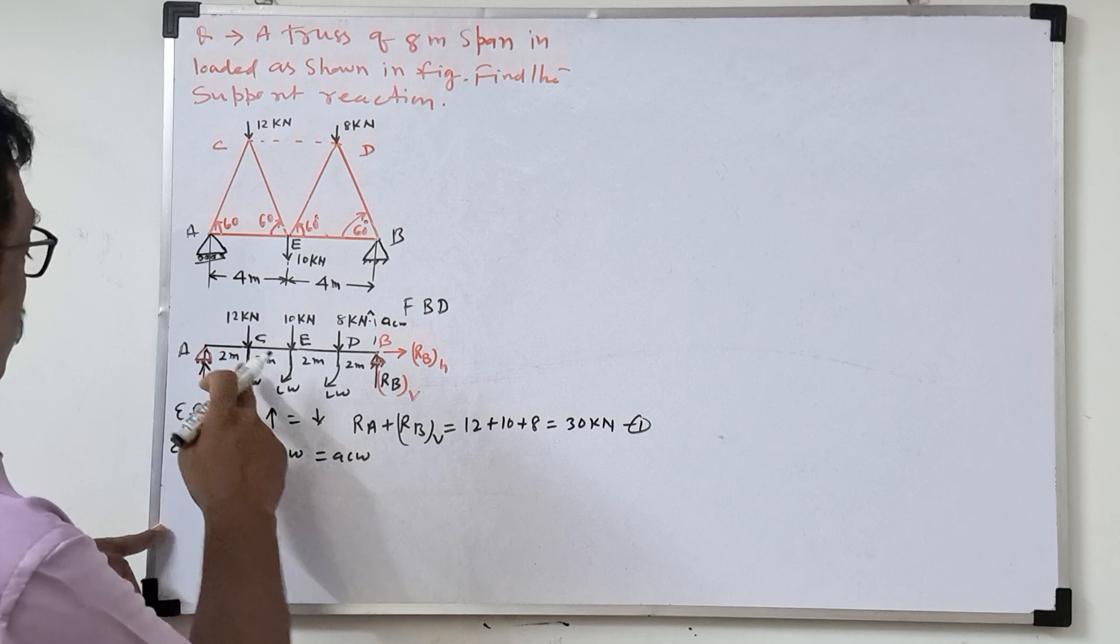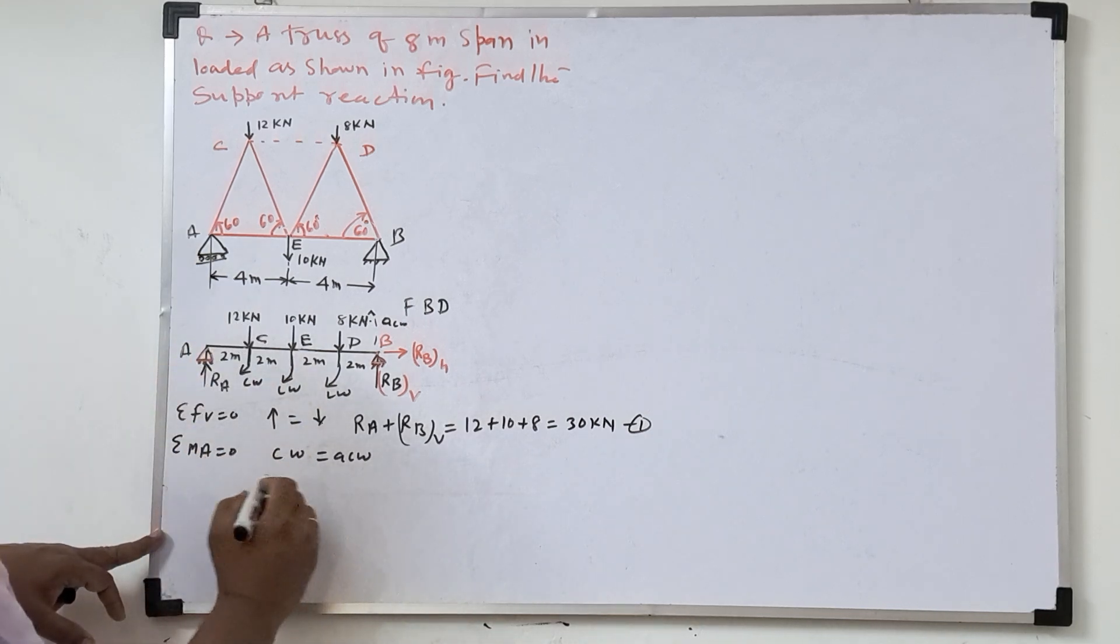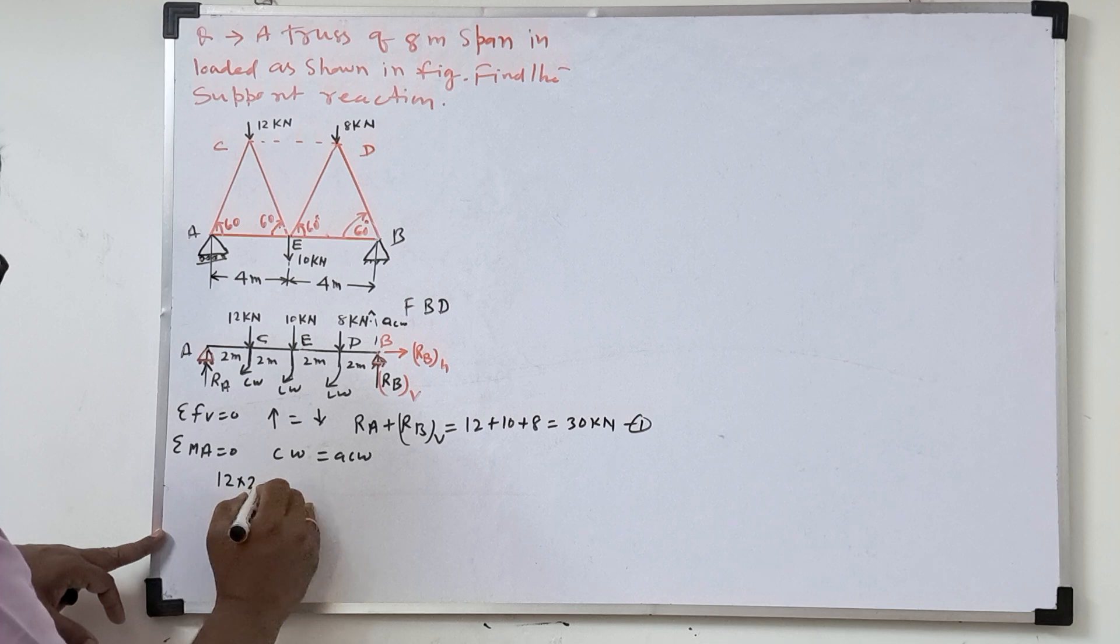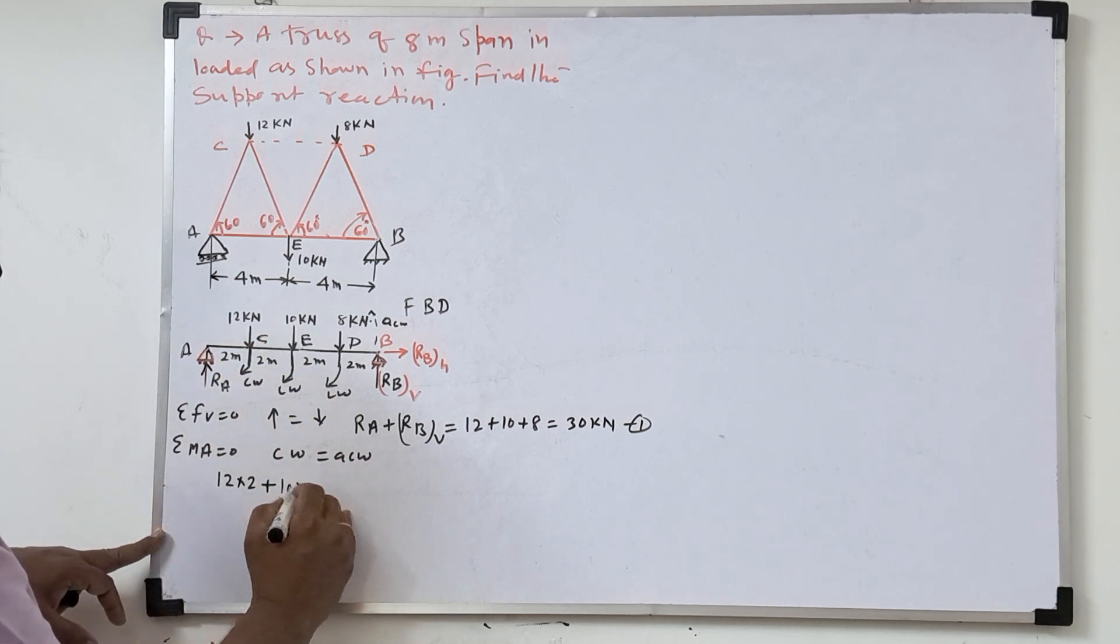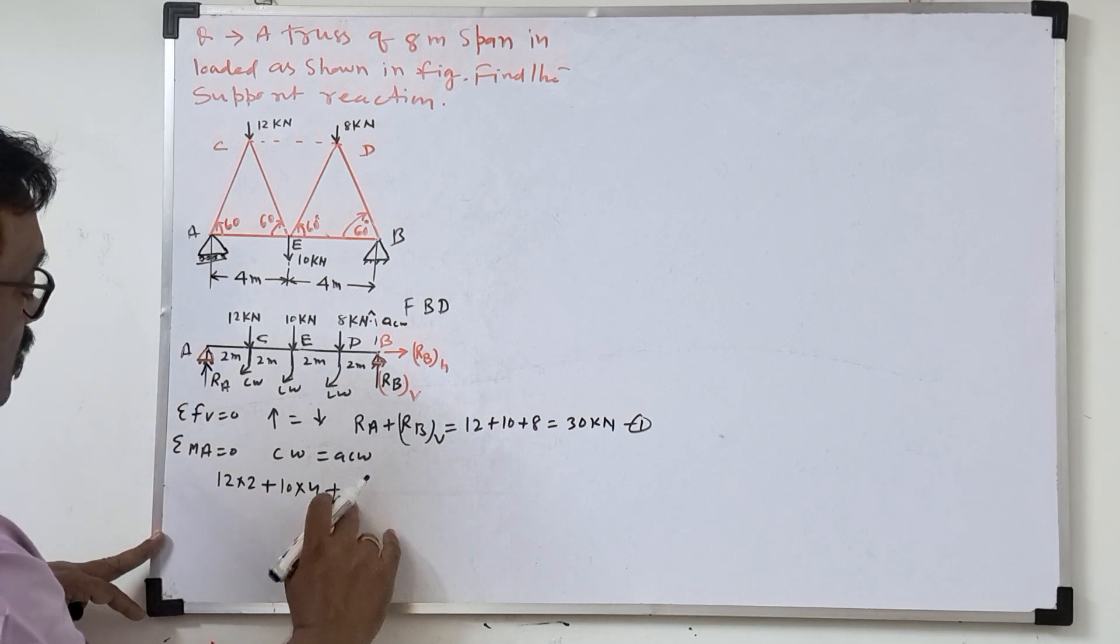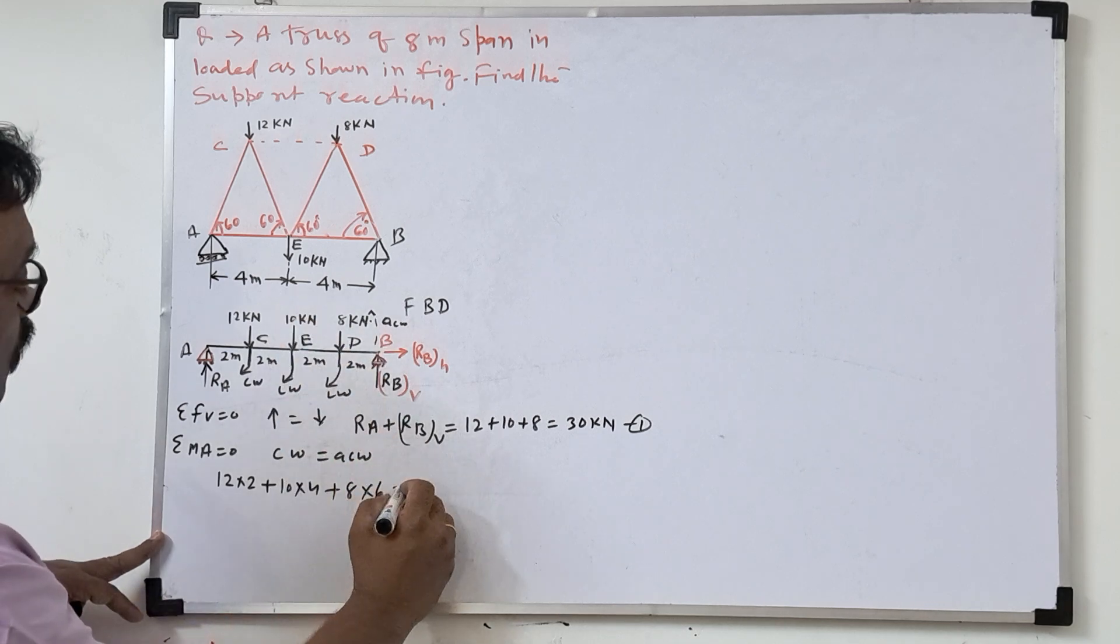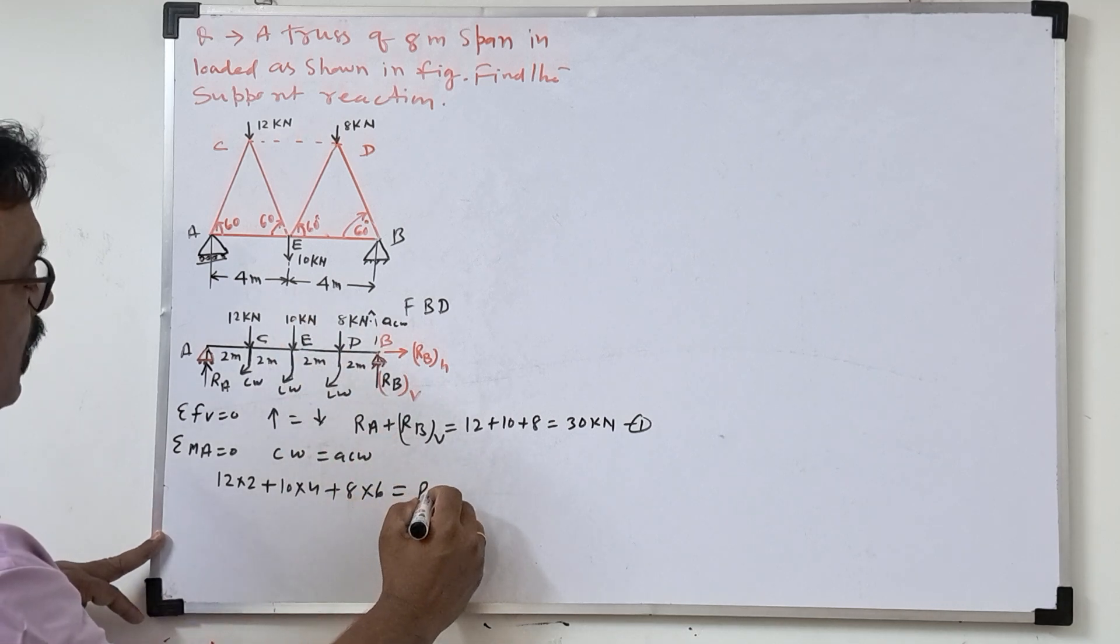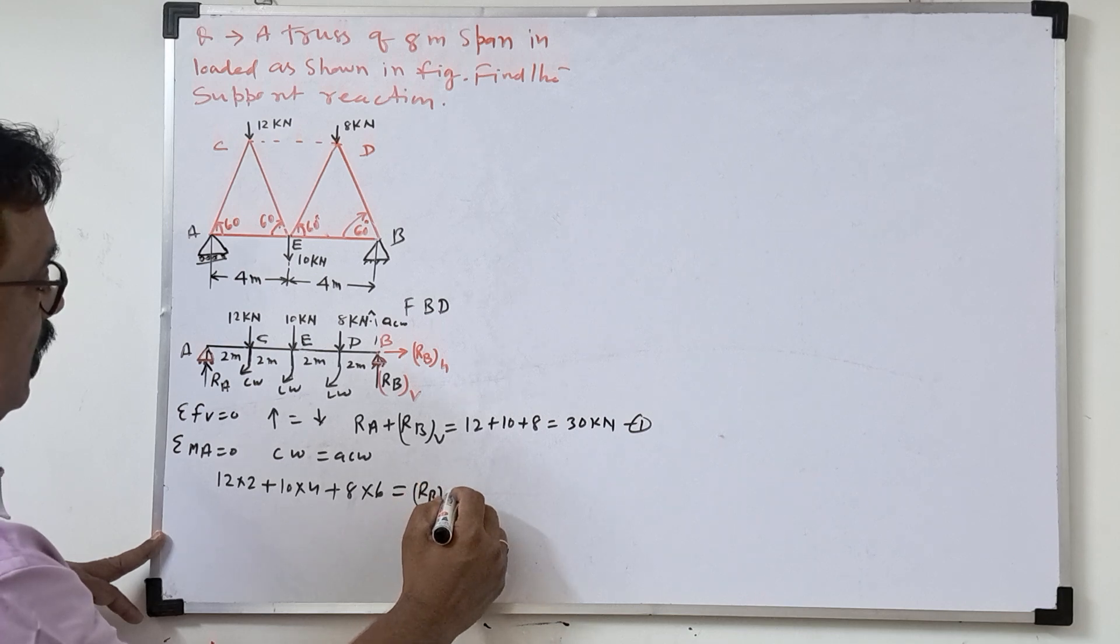So what is the rotation here? 12 into vertical distance is 2 plus 10 into vertical distance 4, plus 8 into 6. Then anti-clockwise direction, what is? RBV into total distance 8.